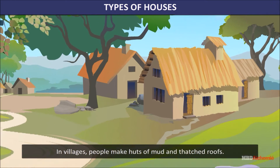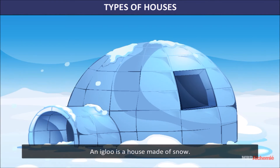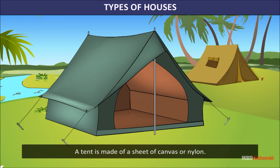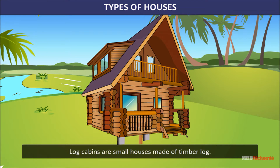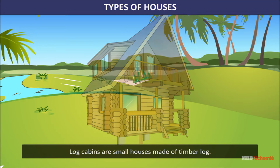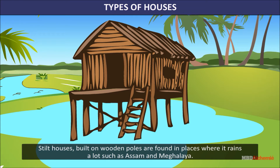In villages, people make huts of mud with thatched roofs. An igloo is a house made of snow. A tent is made of a sheet of canvas or nylon. Log cabins are small houses made of timber. Stilt houses, built on wooden poles, are found in places where it rains a lot, such as Assam and Meghalaya.